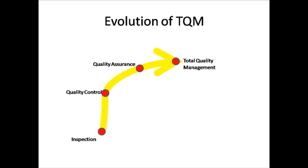The evolution of TQM has happened as shown in the figure. For a better understanding, watch module number 3, topic number 1 of the current series. The first stage of TQM is inspection, then comes quality control, the third stage is quality assurance, and finally it is Total Quality Management.